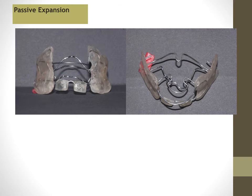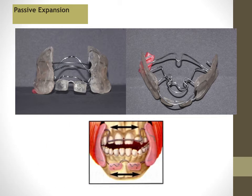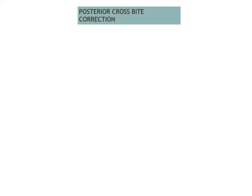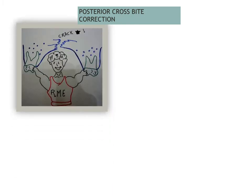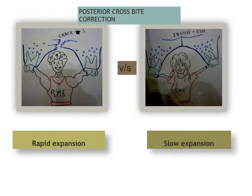Next is passive expansion. The Frankel myofunctional appliance — with lip pads in the mandible for class 2 — also causes passive expansion of both arches. We can choose which arch to expand more by varying the thickness of the buccal shield, as it removes the restraining effect of the cheeks and lips, allowing the arch to expand freely without active force. For active force, we can do rapid expansion if skeletal in nature, or slow expansion if only dental correction is needed.